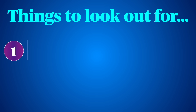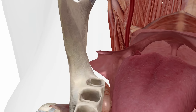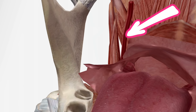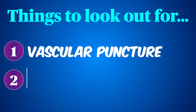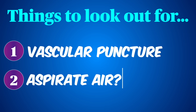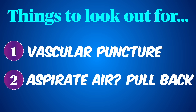If you aspirate blood, you're probably too far lateral and in fact might be in the carotid — don't inject unless you want to make your airway really exciting. Pull back and aim more medial. If you aspirate air, you've gone through and through and are now in the pharynx behind the tongue. Withdraw and don't be quite so aggressive.